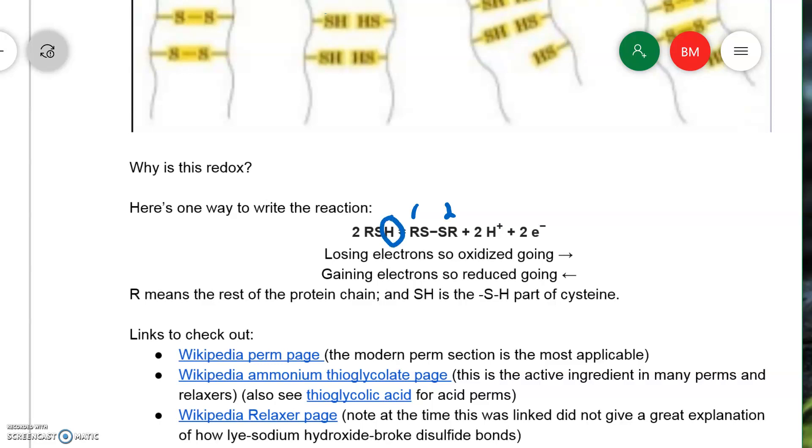In this process, you lose the hydrogens and you lose two electrons. So since this process involves electrons being lost, then going in this direction from unjoined cysteines to joined cysteines is oxidation.